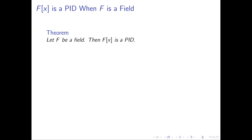One more example of something that forms a PID: if we start with a field F, then the polynomial ring F[x] is a PID. Note that we really and truly need F to be a field here — it's not enough for F to be an integral domain, since the integers are an integral domain but ℤ[x] is not a PID. If we start with a field and look at F[x], the result is a PID. I'd like you to compare this proof closely with the proof that the integers are a PID and see if you can think of a more general approach.